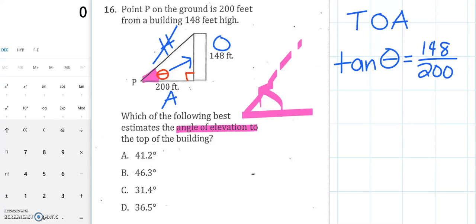anytime you're looking for an angle, you're going to be using all those inverse trig functions. Sine to the negative 1, cosine to the negative 1, tan to the negative 1. So to get theta, what we're going to do is we're going to get the inverse tan, tan to the negative 1 of 148 over 200. And when we put that into our calculator, it's going to spit out the correct angle measure.